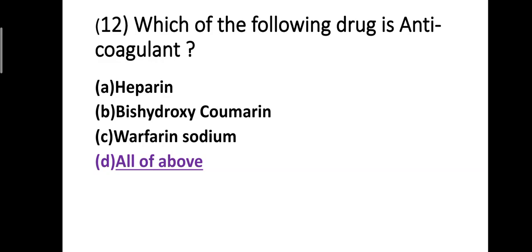Question number twelve: Which of the following drugs is an anticoagulant? Option A: heparin, option B: bishydroxycoumarin, option C: warfarin sodium, option D: all of the above. Correct answer is option D, all of the above. Heparin, bishydroxycoumarin, and warfarin sodium are all examples of anticoagulant drugs.